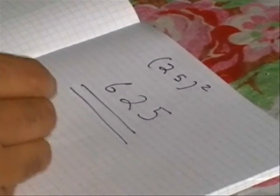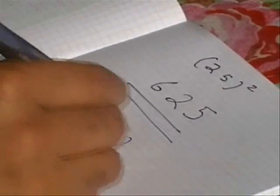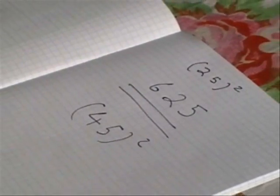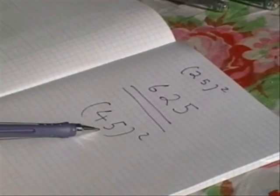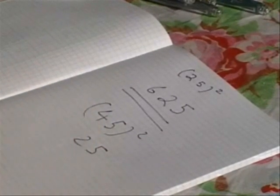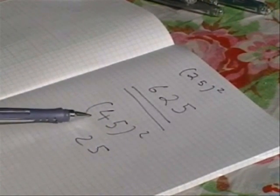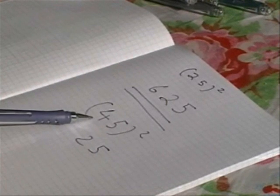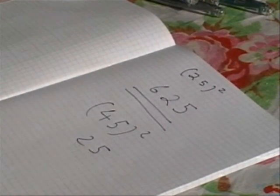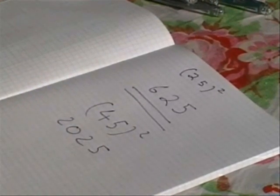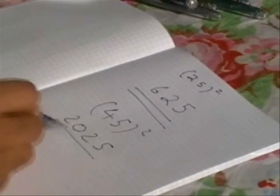If I have, say, 45 squared, remember, take the digit 5, square it to get 25. The next number after 4 in the number sequence is 5, so 4 times 5 is 20, and the answer is 2025.